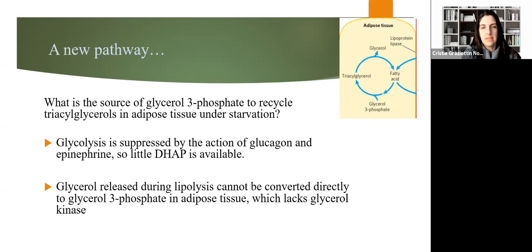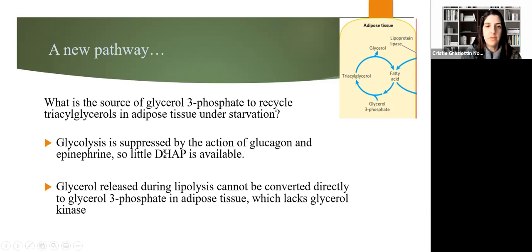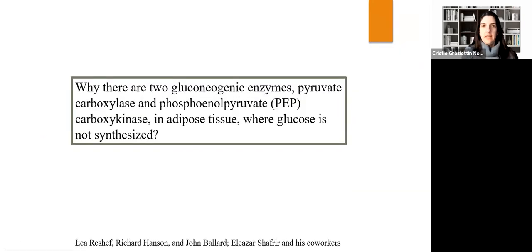Some questions arose and led to the discovery of a new pathway. The first question was: what is the source of glycerol-3-phosphate to recycle triacylglycerol in adipose tissue under starvation? This came up because glycolysis is suppressed by glucagon and epinephrine, so little dihydroxyacetone phosphate is available. Also, glycerol released during lipolysis cannot be converted directly to glycerol-3-phosphate in adipose tissue because there is no glycerol kinase there. Another question was: why are there two gluconeogenic enzymes — pyruvate carboxylase and phosphoenolpyruvate carboxykinase — in adipose tissue where glucose is not synthesized?